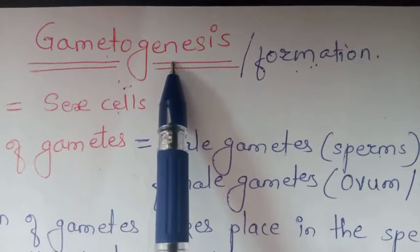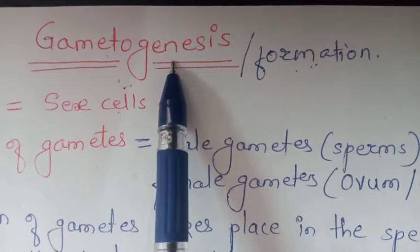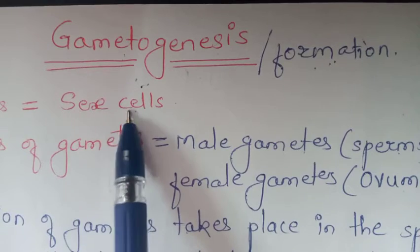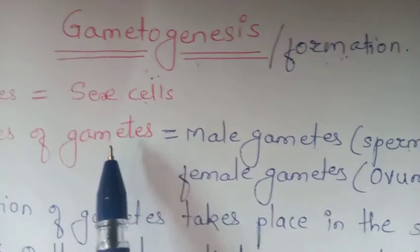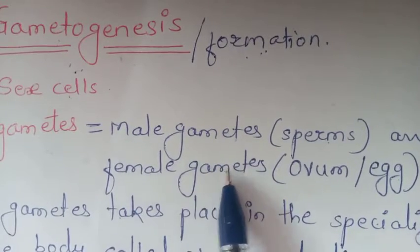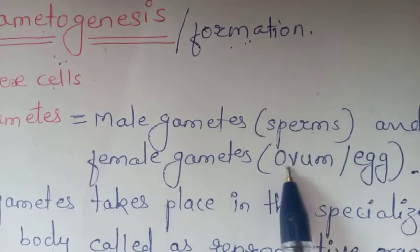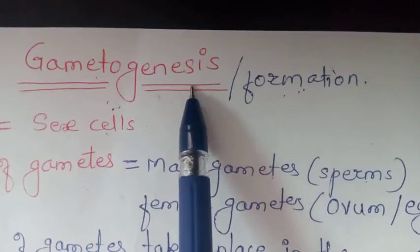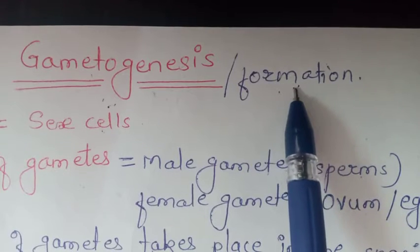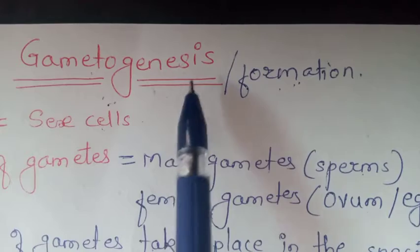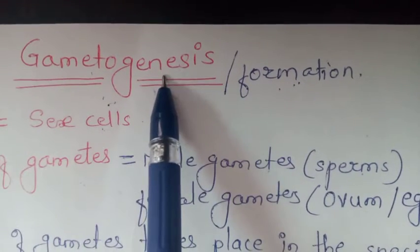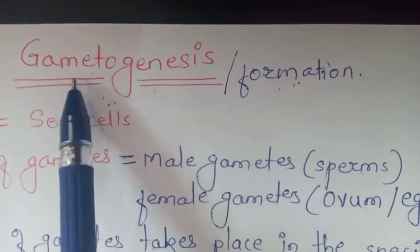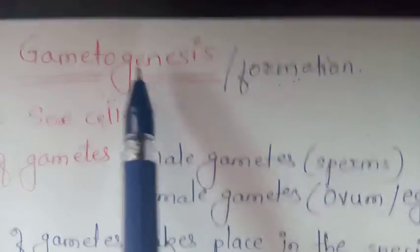Gametogenesis means formation of gametes. Gametes means sex cells. In the human body, two types of gametes are present — male gametes, which are sperms, and female gametes, which are ovum or egg. Genesis means formation. So gametogenesis means the formation of gametes.